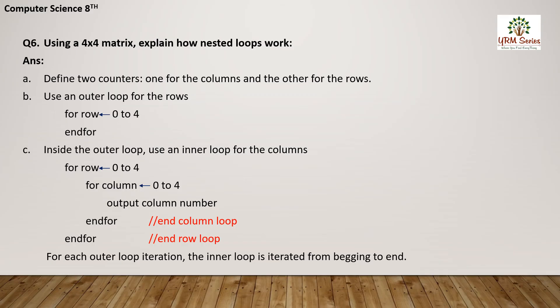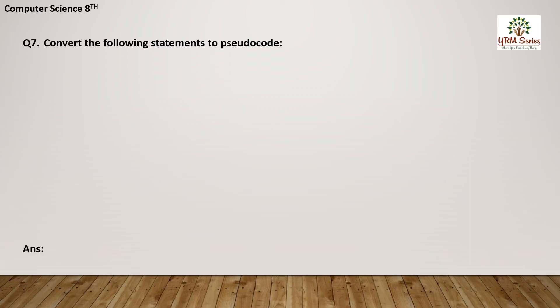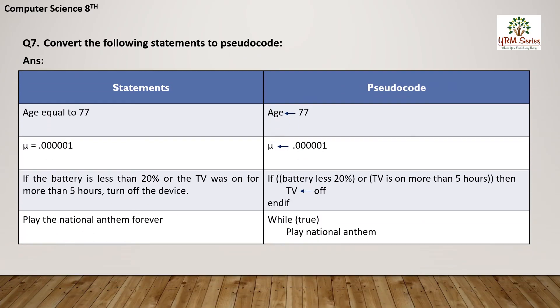When the row value reaches 5, the two loops will terminate and end. For each outer loop iteration, the inner loop is iterated from beginning to end. So when the row's value is 0, the inner column loop continues from 0 to 4. When row's value is 1, the inner loop continues again. When row's value is 2, the same process continues until the outer loop ends.